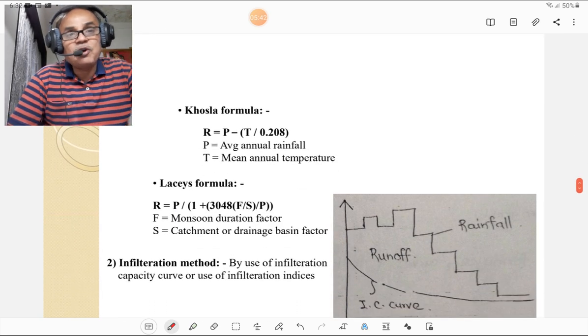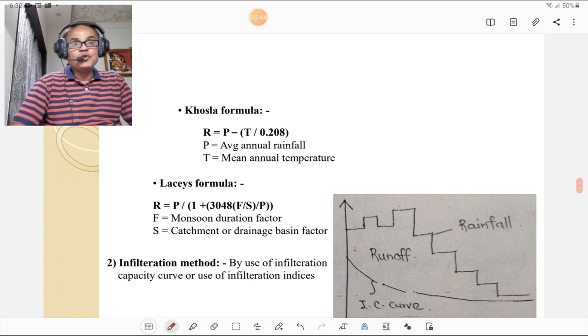Then Khosla formula is also used. That Khosla formula is R equals P times (T divided by 0.208), where P equals average annual rainfall and T equals mean annual temperature, and R is the runoff.